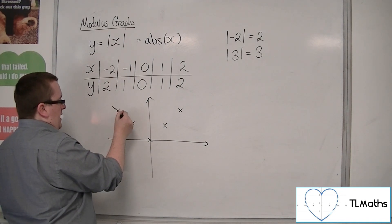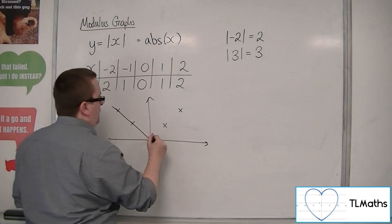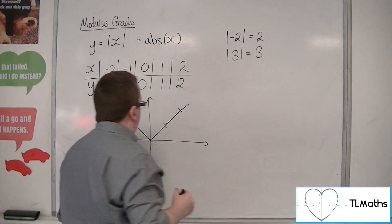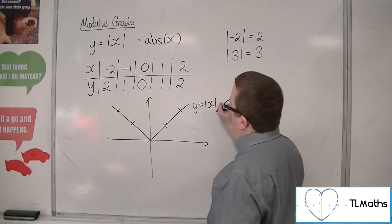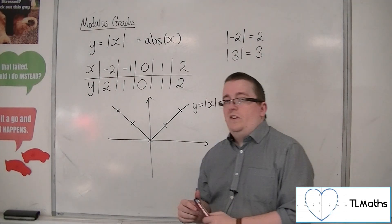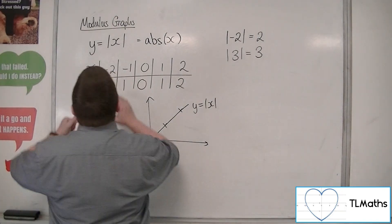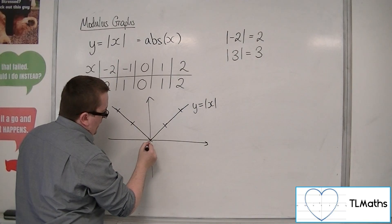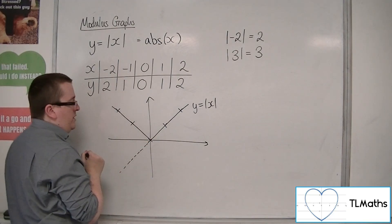OK, so what you get is this V-shape. And this is y equals the modulus of x. OK, so effectively, what you originally had was the line y equals x, which is a diagonal line that goes through the origin, like so.